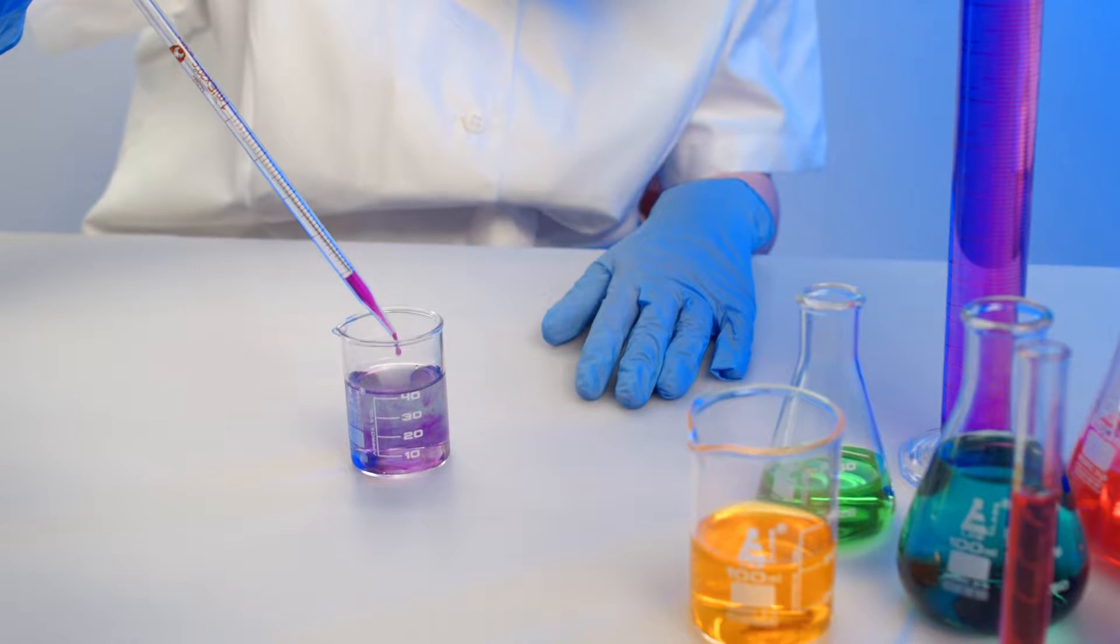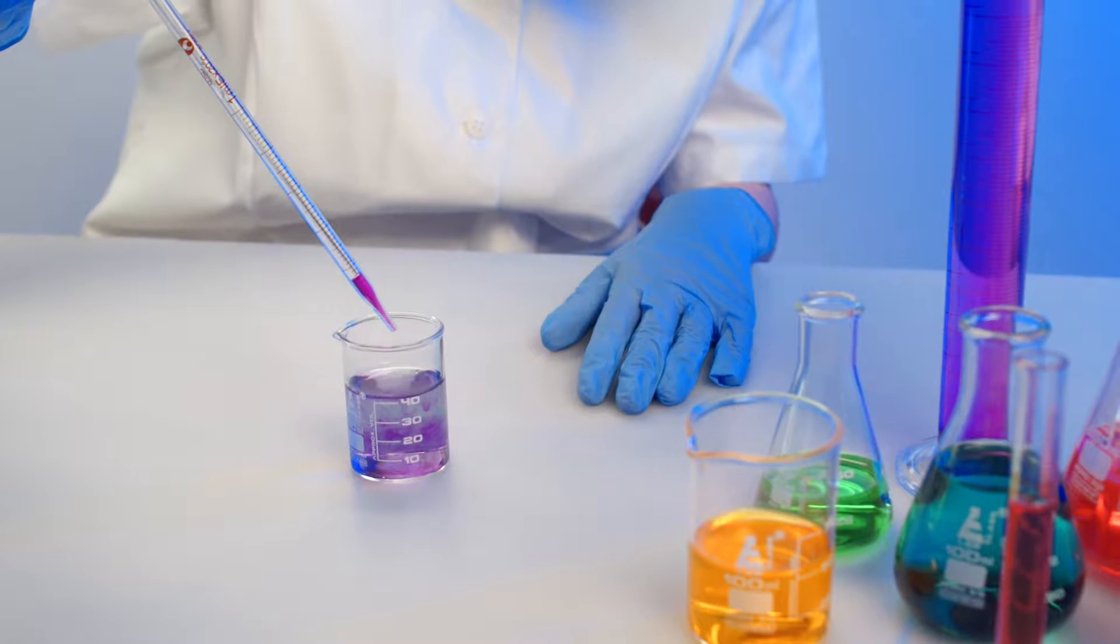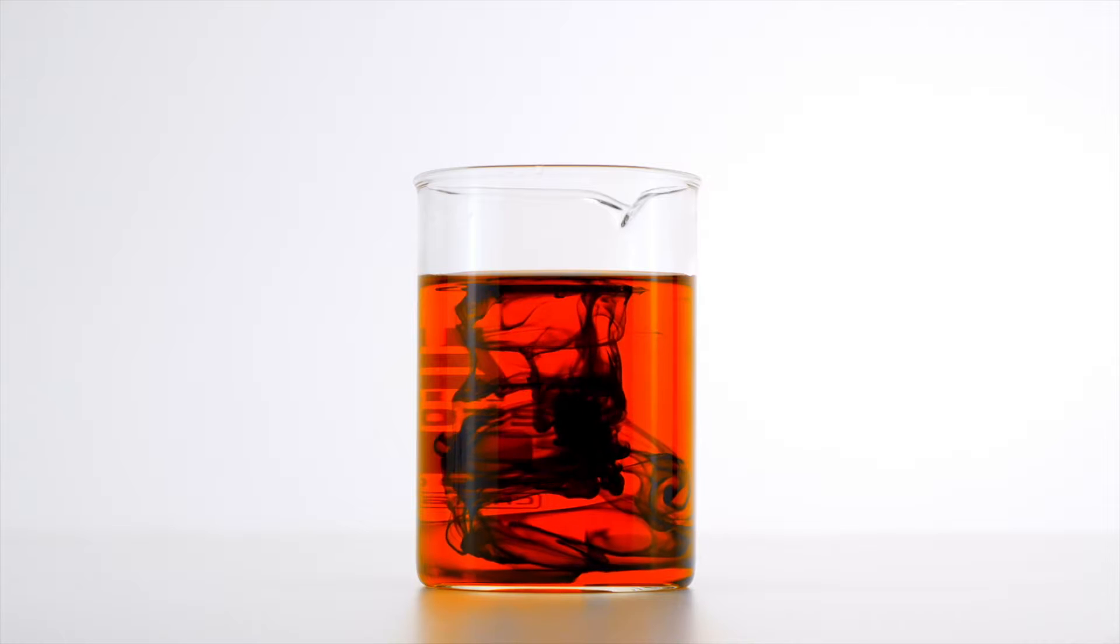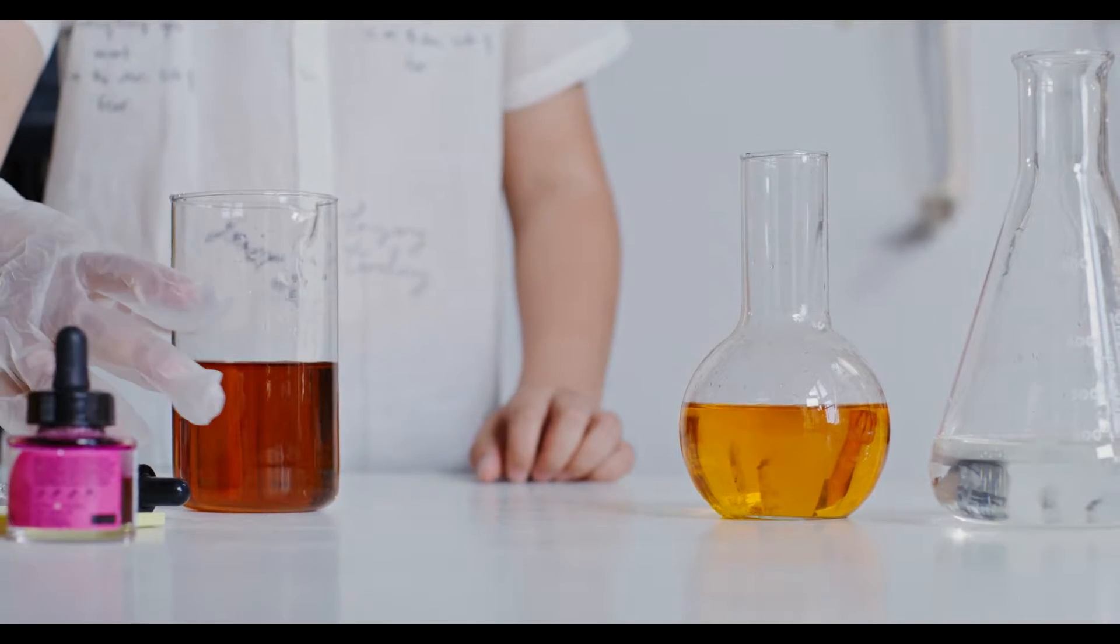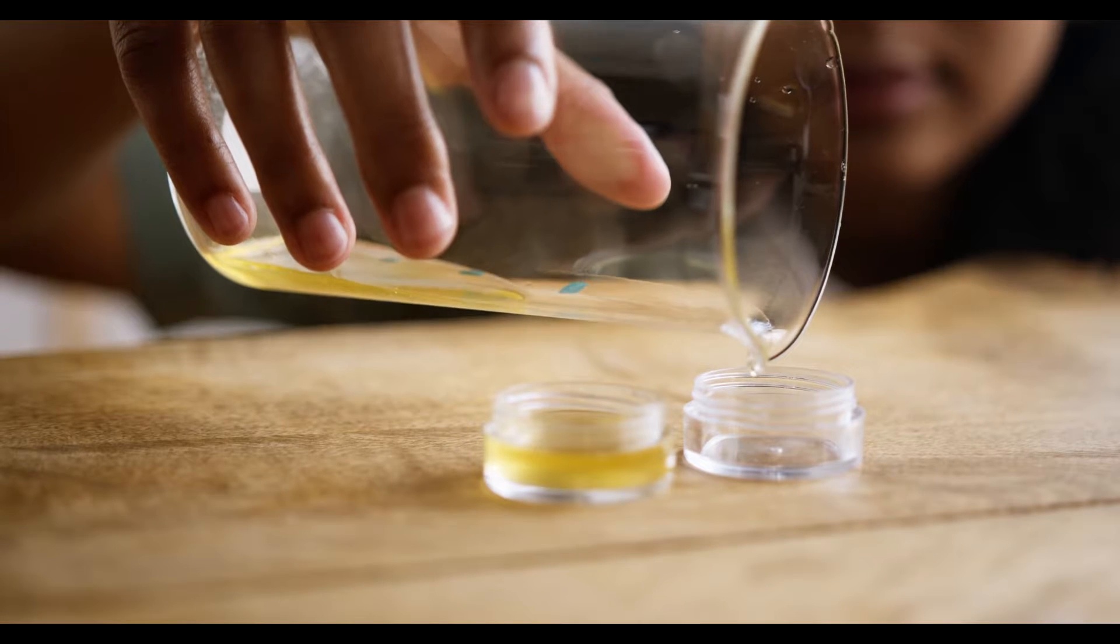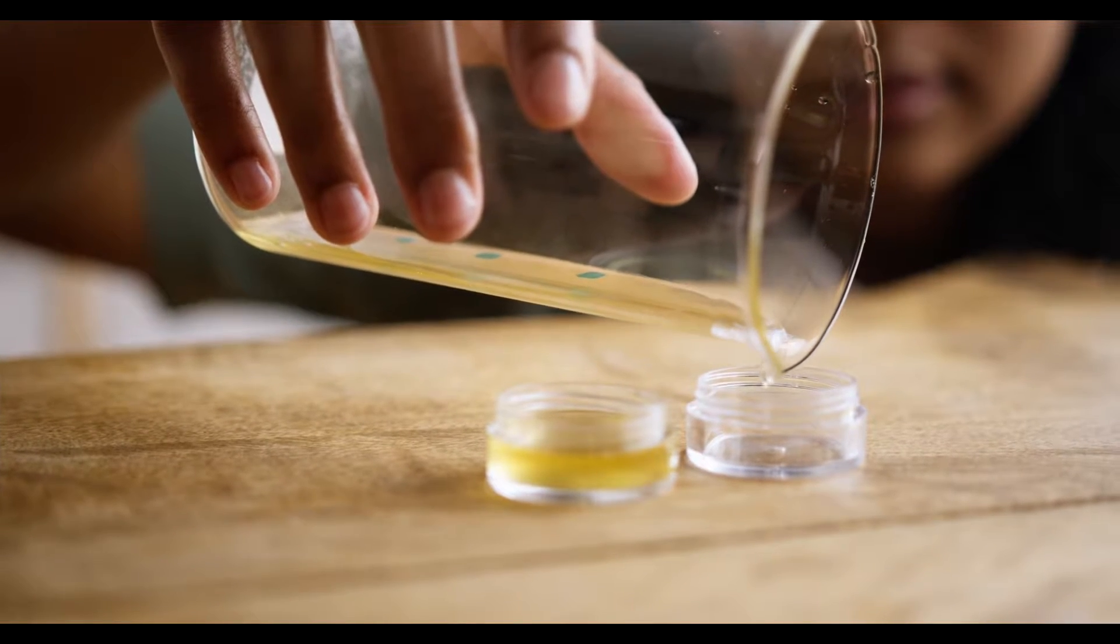A beaker is glassware used mainly as a container to hold a liquid or solid. Beakers can also be used to carry out simple reactions or heat chemicals. They come in many different sizes, for example, 250ml and 500ml beakers.